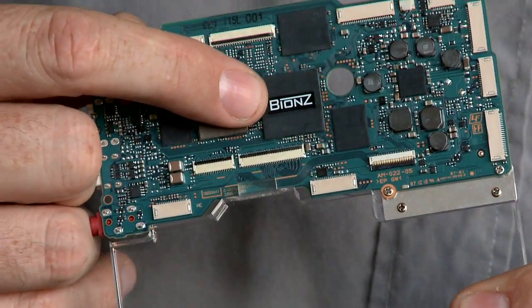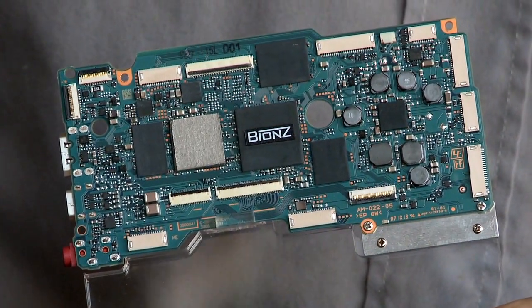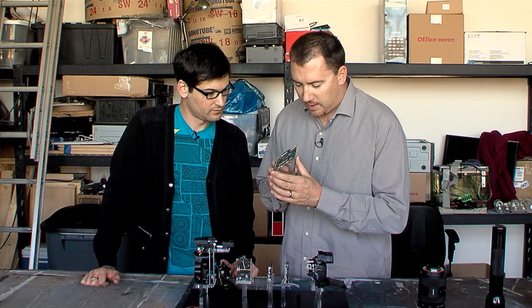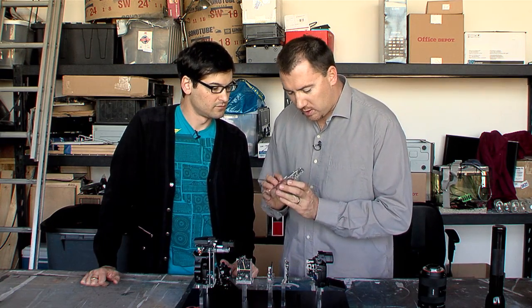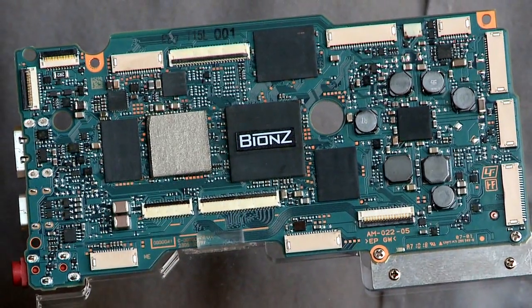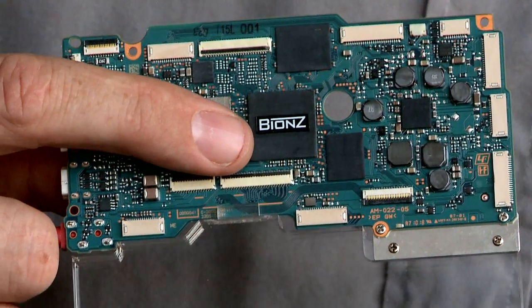So moving on to the other parts, this is the circuit board. This is kind of the guts and the brains of the camera. And as you can see, it's made up of different components. Most of it, I can't tell you what it is, except I can tell you that it has the Bionz image processors, which are extremely fast.